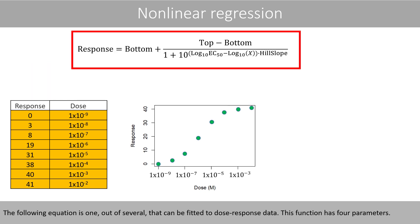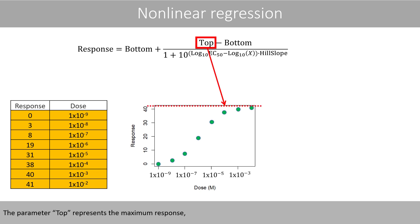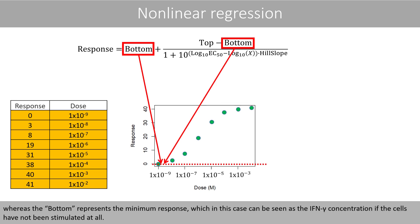The following equation is one out of several that can be fitted to dose-response data. This function has four parameters. The parameter top represents the maximum response, whereas the bottom represents the minimum response.